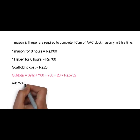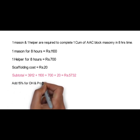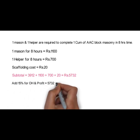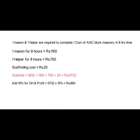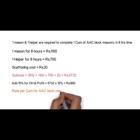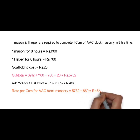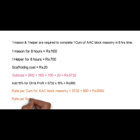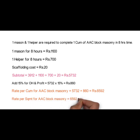Now add 15% for overhead and profit: 5,732 × 15% = 860 rupees. This is the rate per cubic meter for AAC block masonry: 5,732 + 860 = 6,592 rupees. We can convert it to square meter by multiplying by the thickness of the block, which is 0.2 meter. The rate per square meter for AAC block masonry shall be 6,592 × 0.2 = 1,318 rupees per square meter.